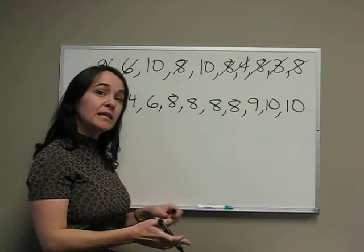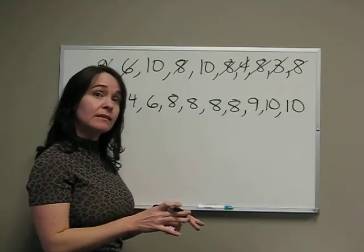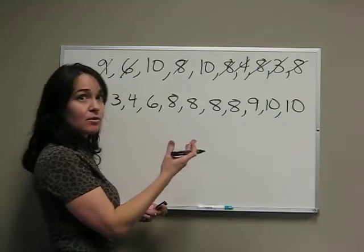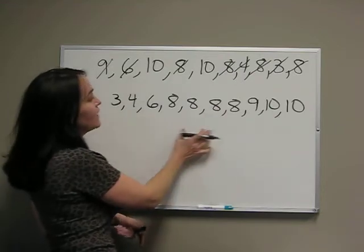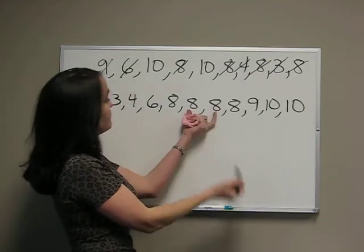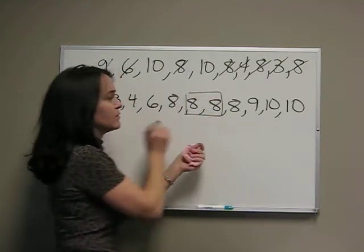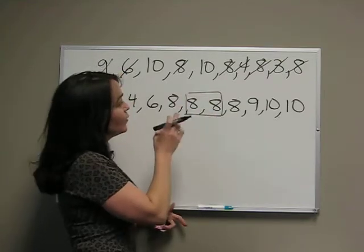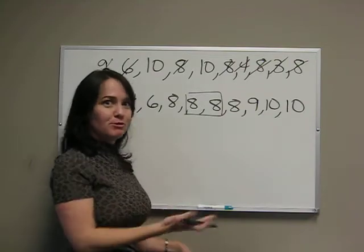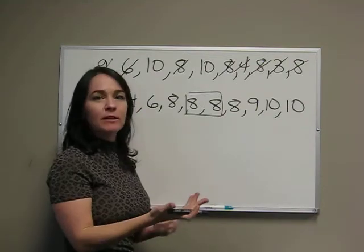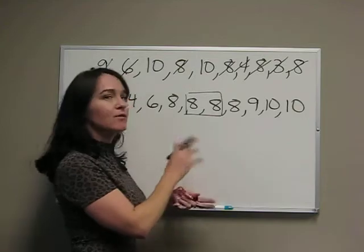Now remember, median is the center of an ordered list, so we have to find the center of this. Well, now we have 10. So if I look for the center, I'm going to get two numbers. Now, we can figure out what the middle of 8 and 8 is because they're the same number, but let's pretend like we couldn't do that - they were two different numbers.